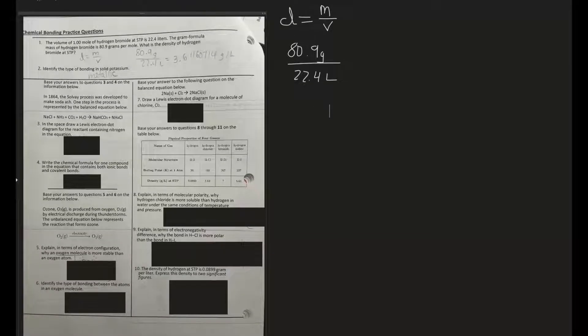Number three says in 1864 the Solvay process was developed to make soda ash. One step in the process is represented by the balanced equation. Draw a Lewis dot diagram for the reactant containing nitrogen in the equation. If we look at our reactants, we can see that the one that has nitrogen in its equation would be NH3.